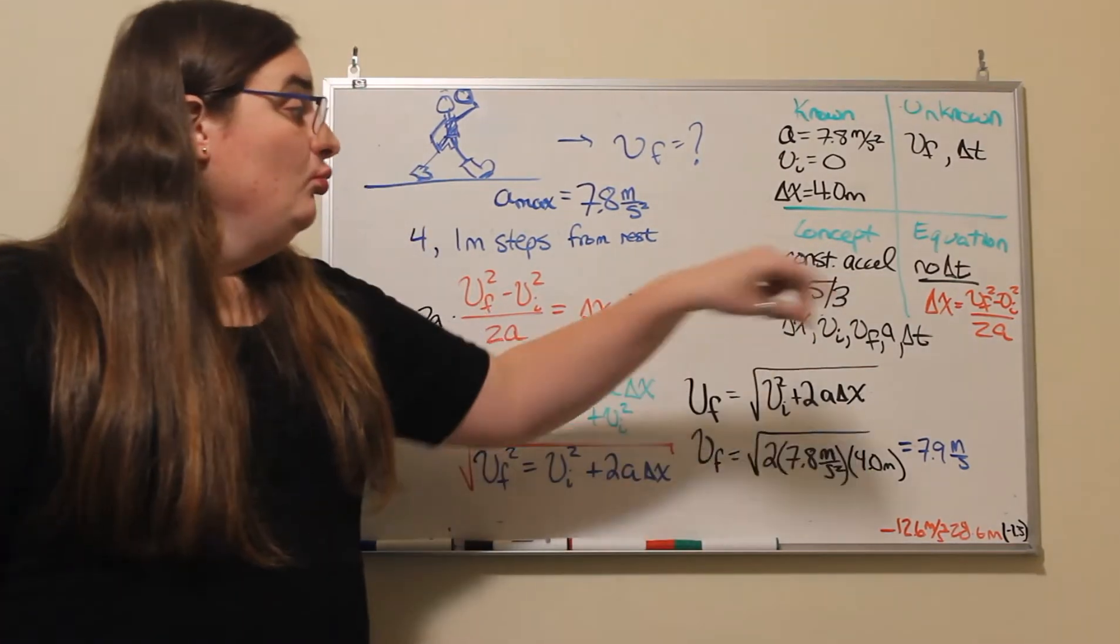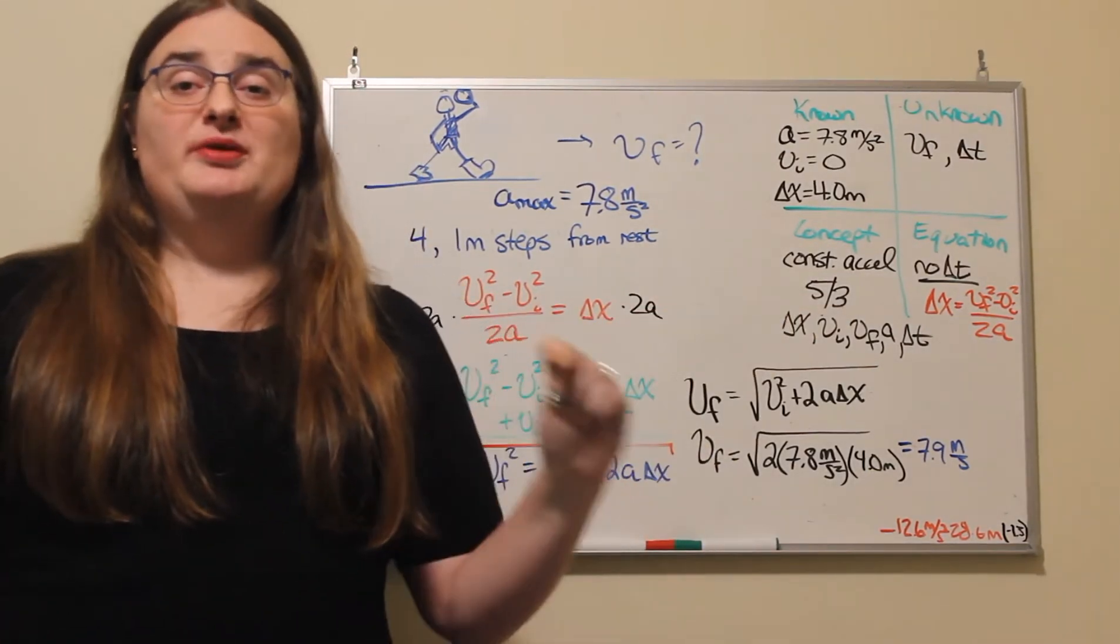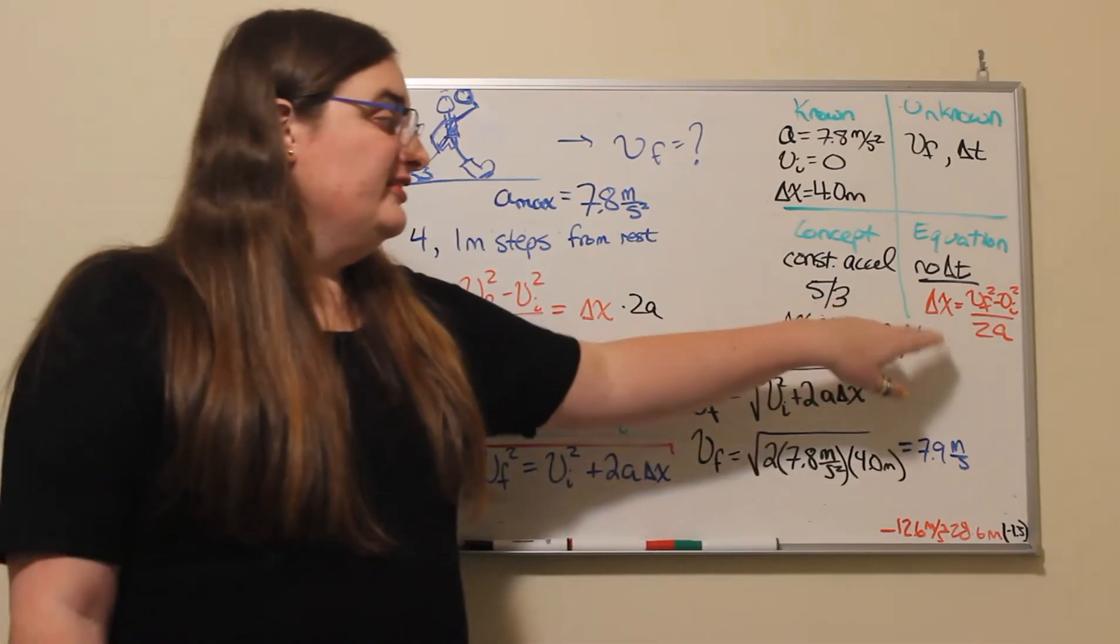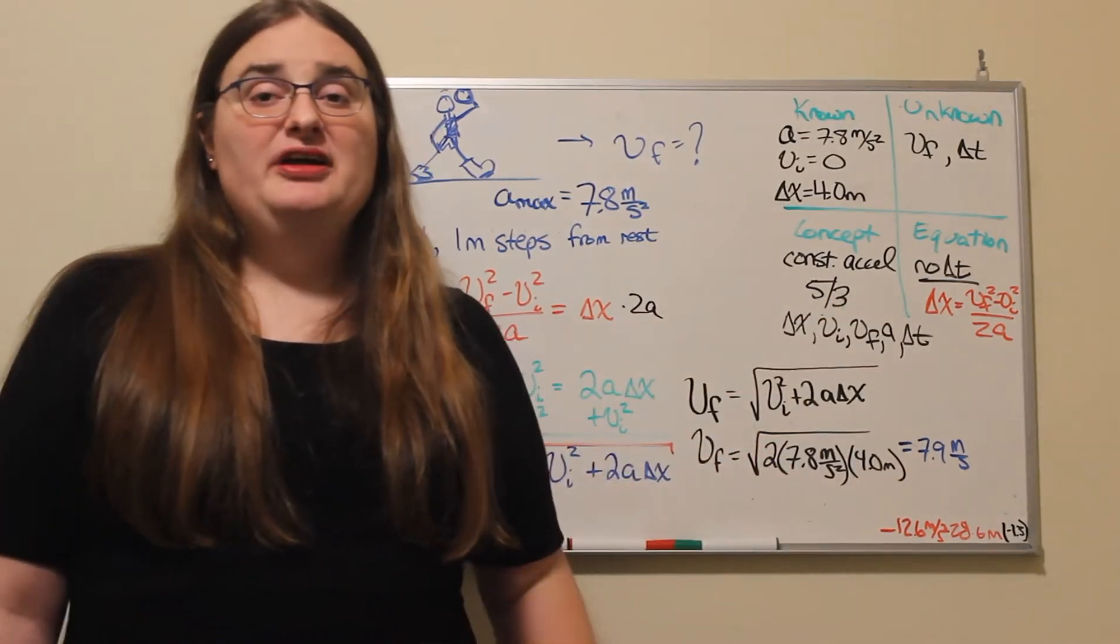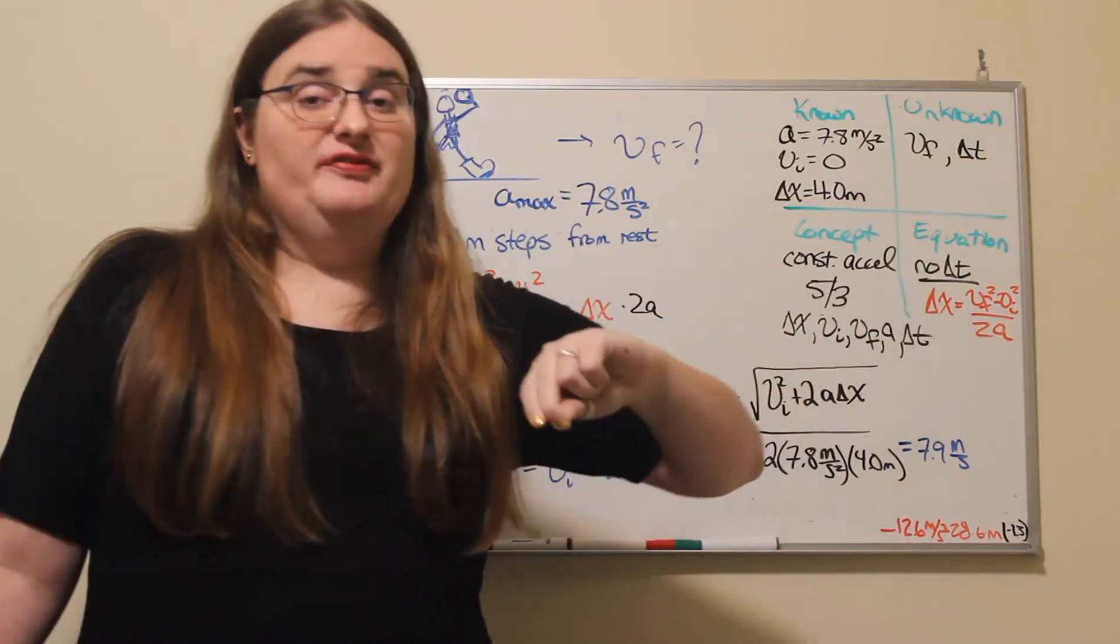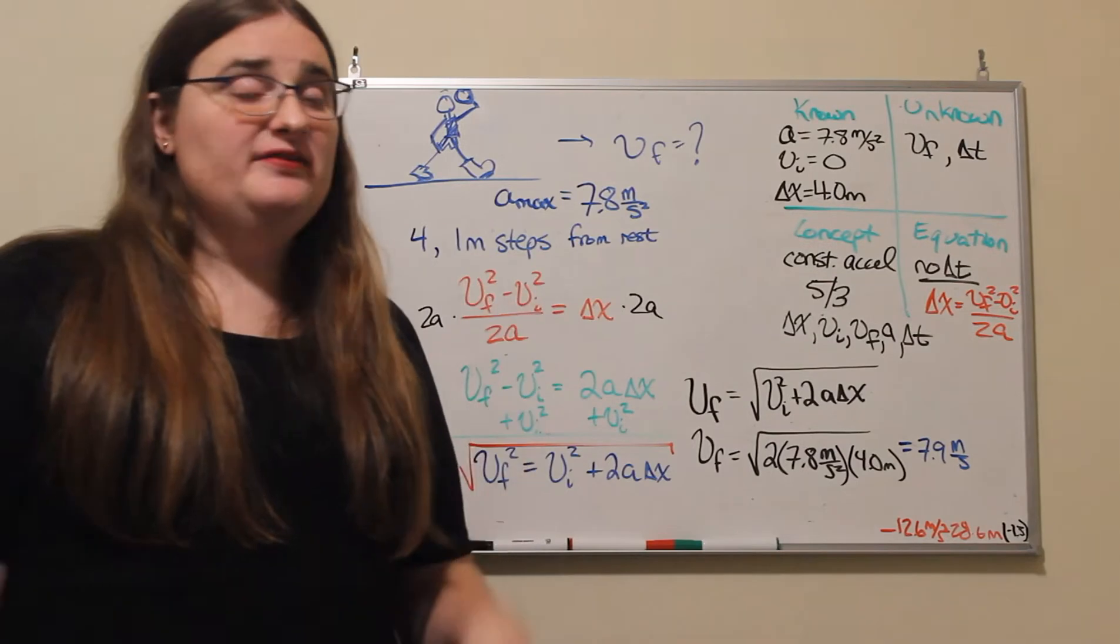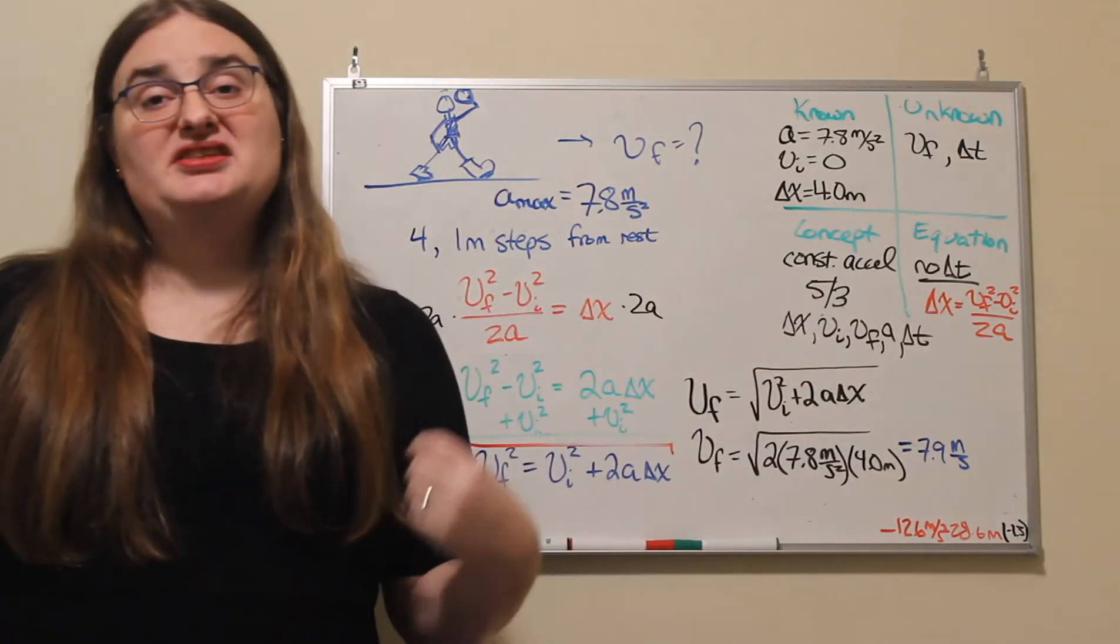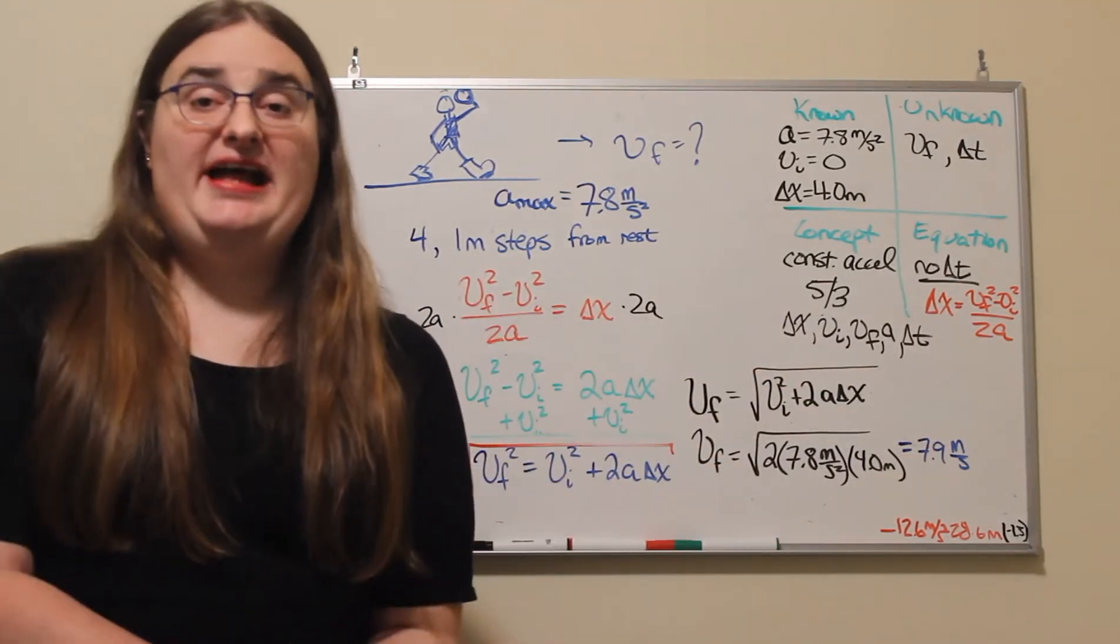So one way to write the equation of motion without time is to say that our displacement, which I have, is equal to my final velocity squared, which I need, minus my initial velocity squared, which I have, divided by two times the acceleration, which I have.